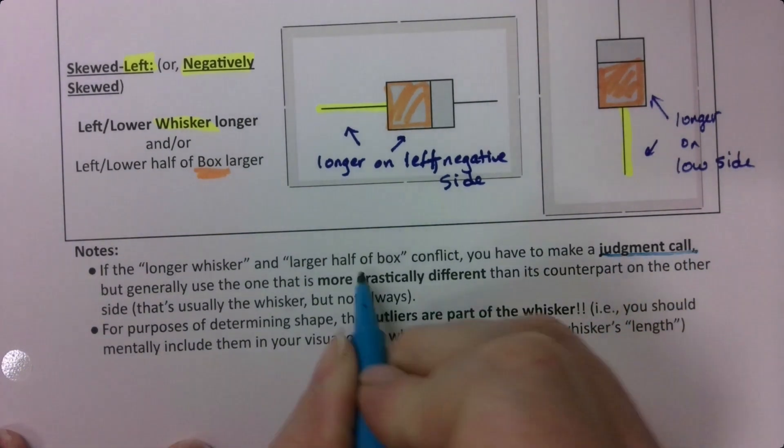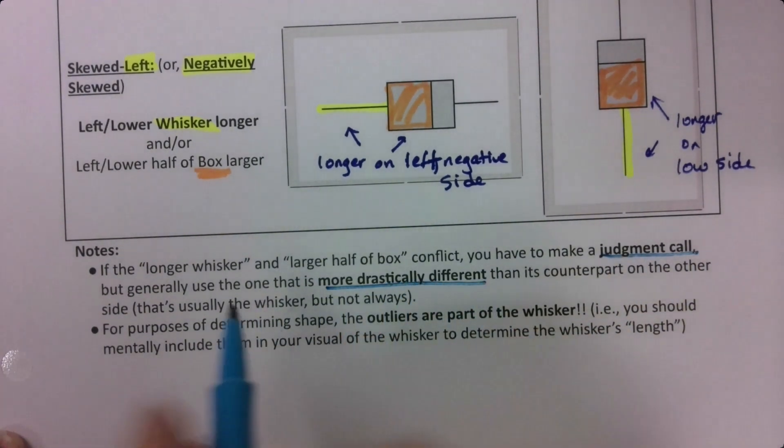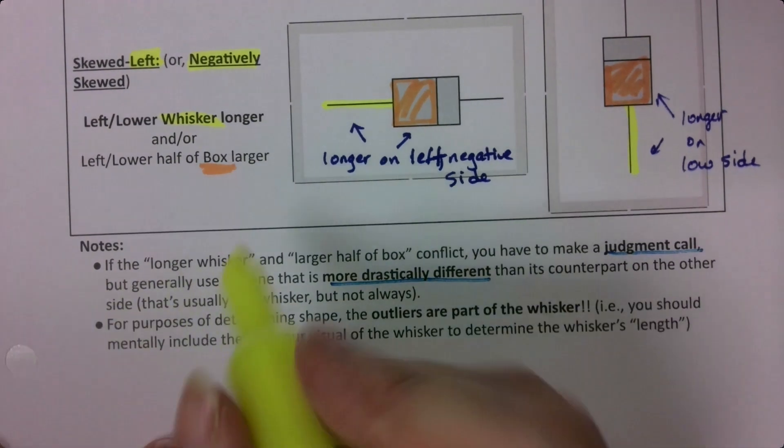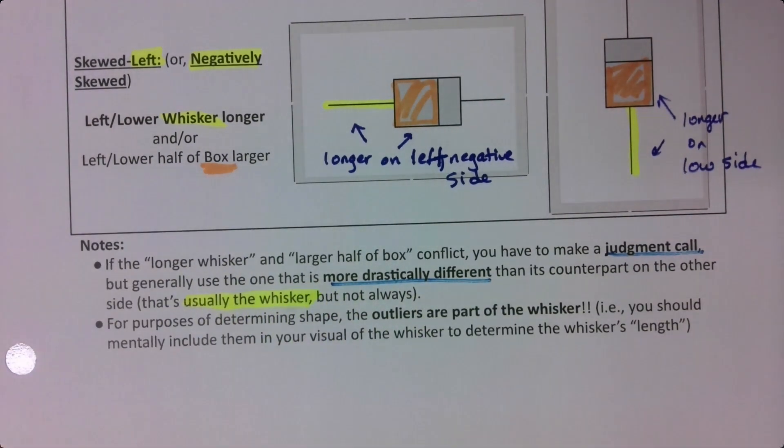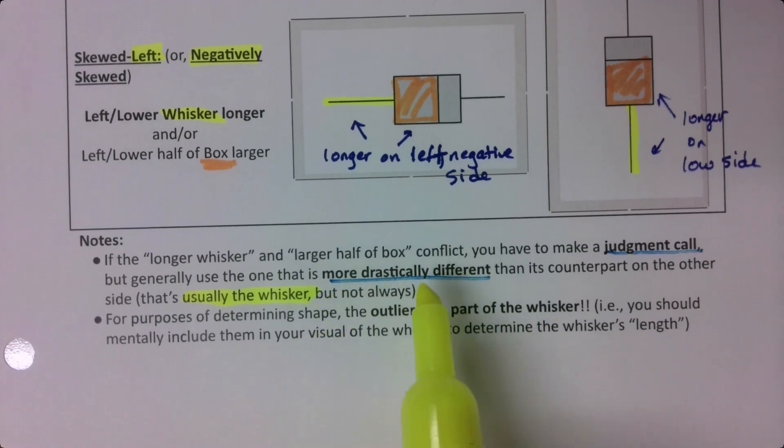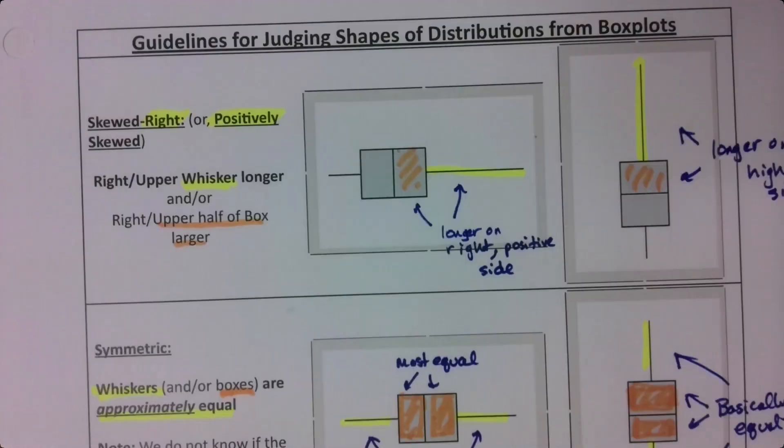You get to make a judgment call based on the most drastic difference. But I will say, usually, it's the whisker that wins out. Not always, but most of the time, the whisker is going to be more drastic, more dramatic. You'll really see it.